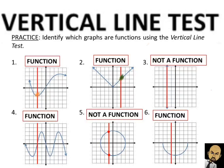Number three has a vertical line, and that line touches the graph everywhere — at all those points. Because it touches the vertical line at more than one point, it fails the vertical line test and is not a function. Number four is a squiggly graph, and the vertical line intersects the graph in only one spot. Because of that, it passes the vertical line test and is a function.